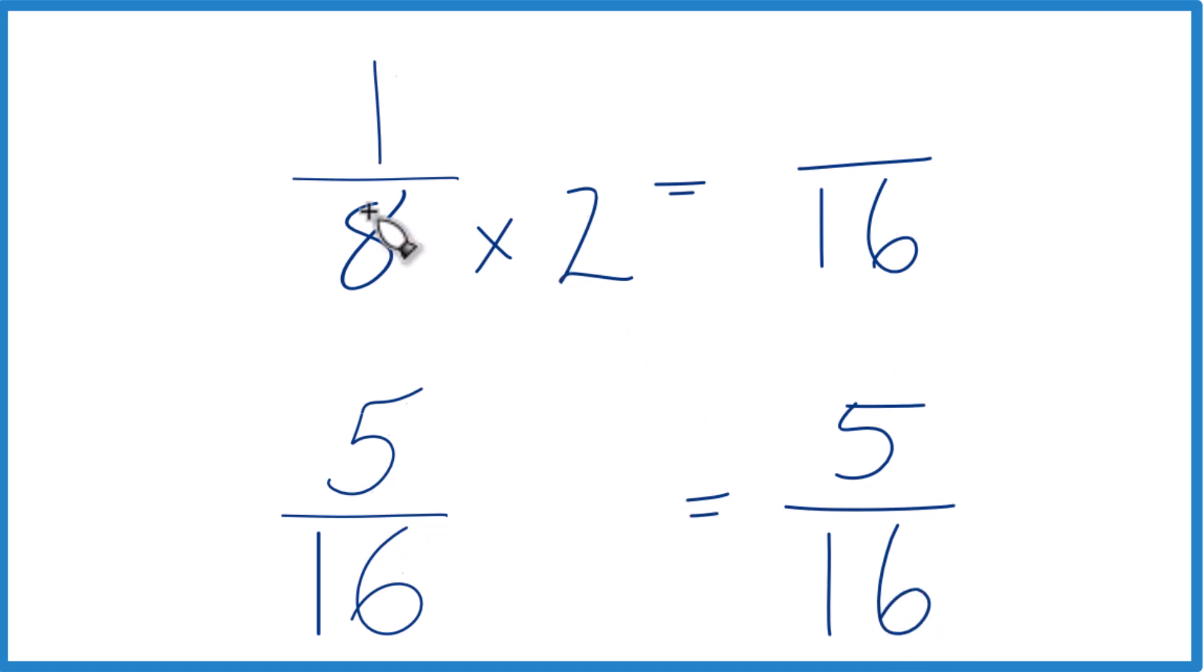Now, since we multiplied the denominator by 2 here, we do need to multiply the numerator by 2. Let's get 2 over 2, that's just 1. So we're multiplying by 1. We don't change the value, just the way it's written.